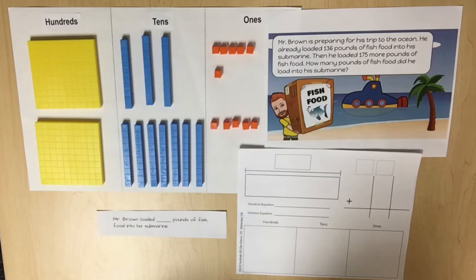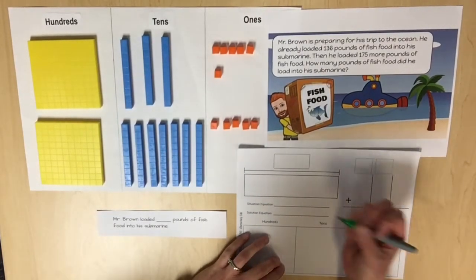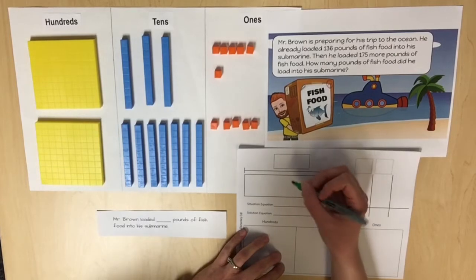Students should discuss the knowns and unknowns and complete the strip diagram on the addition workmat. We know that Mr. Brown started with 136 pounds of fish food already loaded on his submarine.